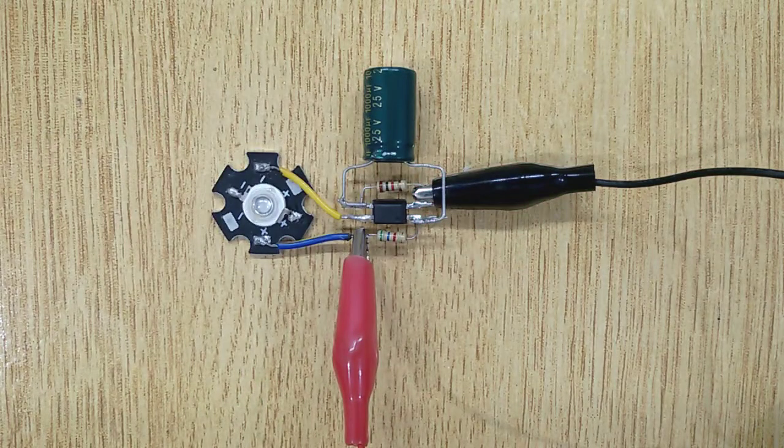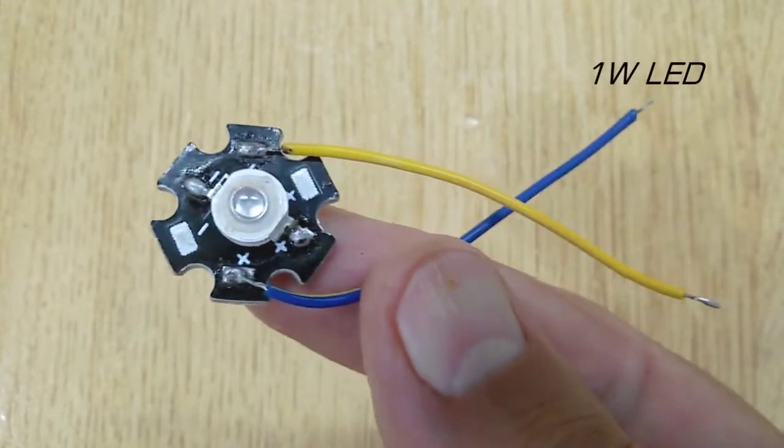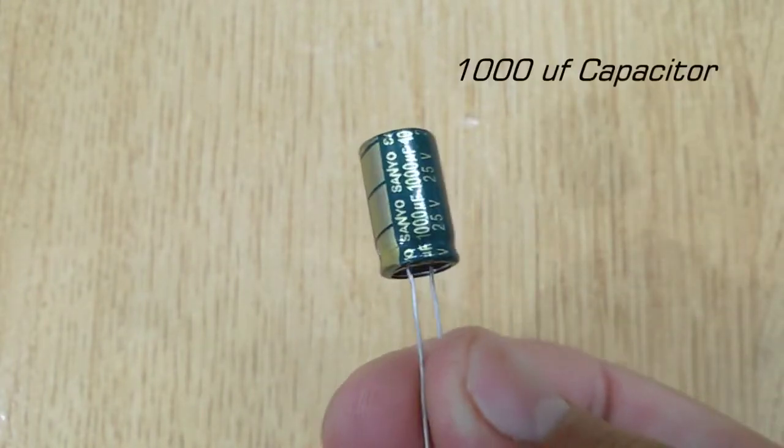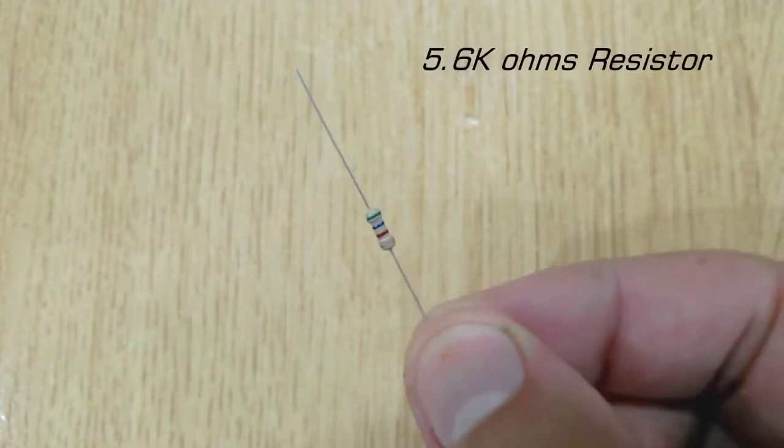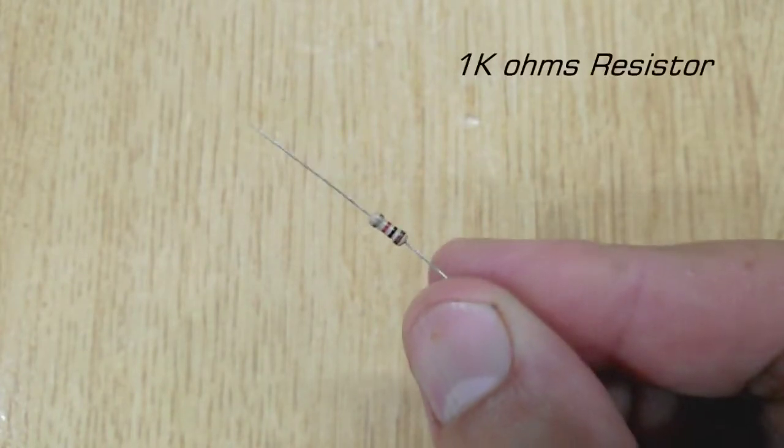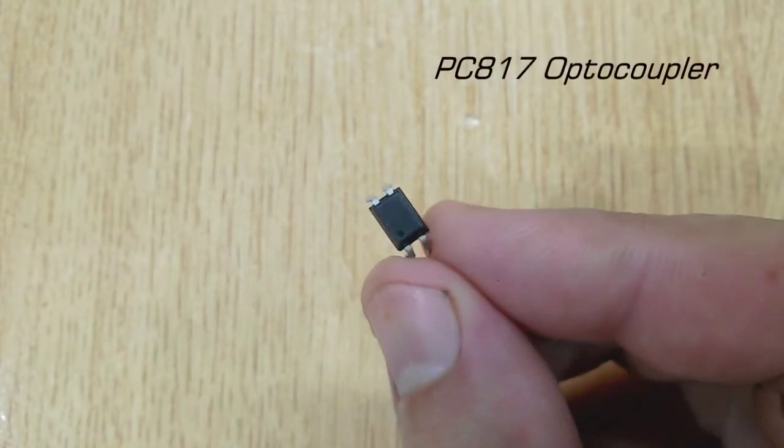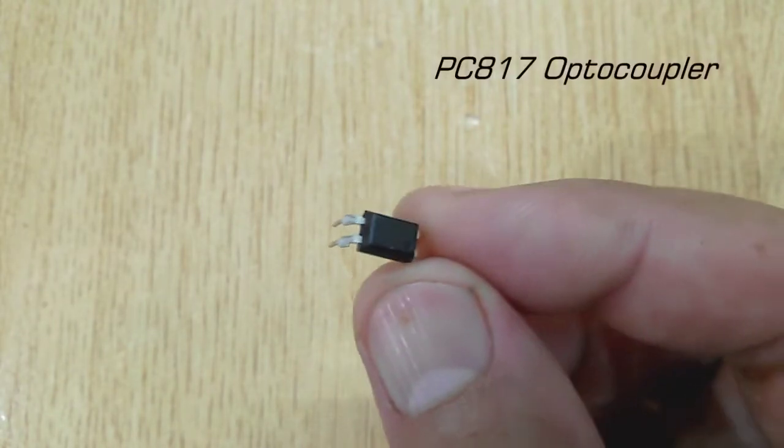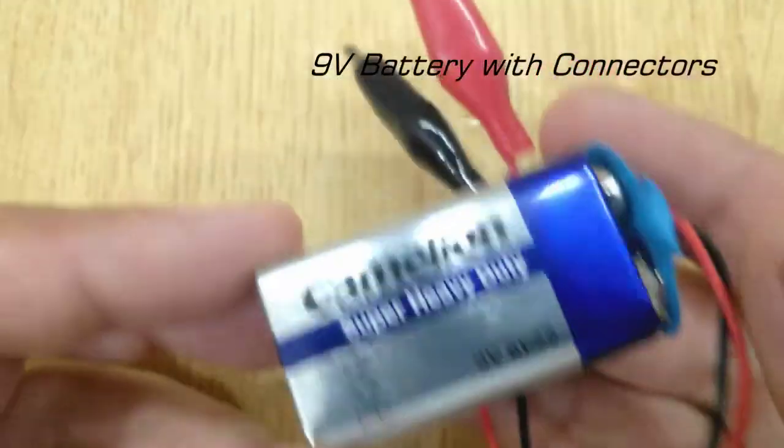To make this super LED strobe light, you will need 1 watt LED, 1000 microfarad capacitor, 5.6K ohms resistor, 1K ohms resistor, PC817 optocoupler and 9 volt battery with connector.